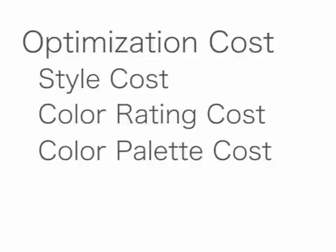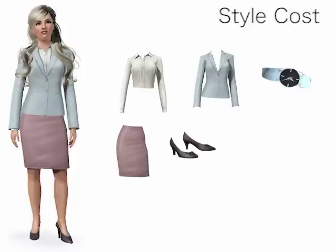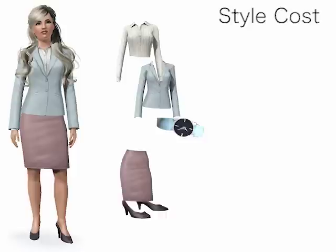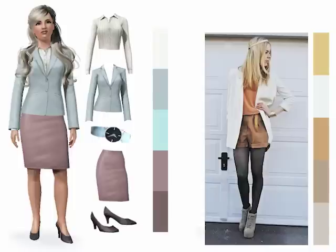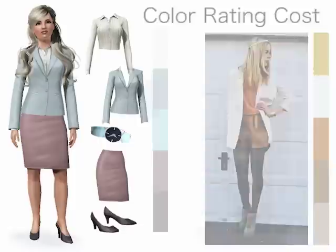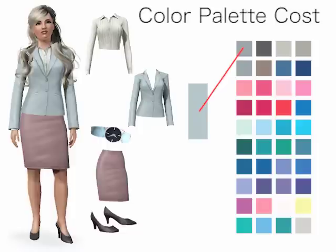The style cost has two parts. The first is the conditional joint probability of the current clothing items given a particular dress code. The second part includes the individual conditional probabilities of the items. The color rating cost evaluates the outfit according to a common practice in fashion of representing outfits using a five-color palette. The color of each selected clothing item is compared to the closest color in the suggested palette, and the sum of the differences contributes to the color palette cost.